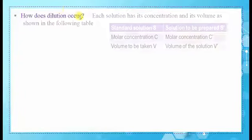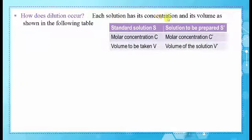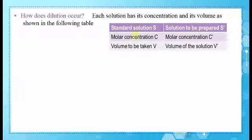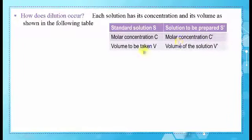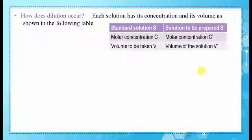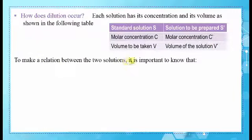How does dilution occur? Each solution has its concentration and volume, as shown in the following table. The standard initial solution S has a molar concentration C. The solution to be prepared after dilution, S', has a new concentration C'. The volume taken from S is represented by V, and the volume of the new solution is represented by V'.